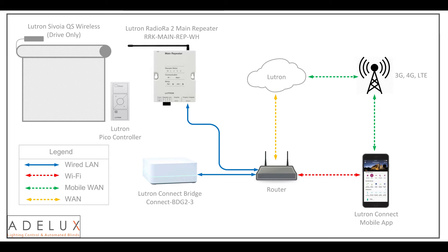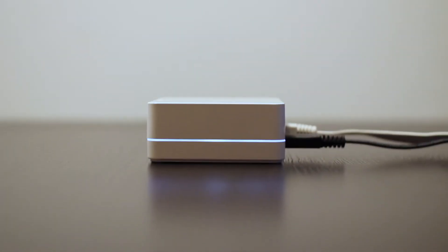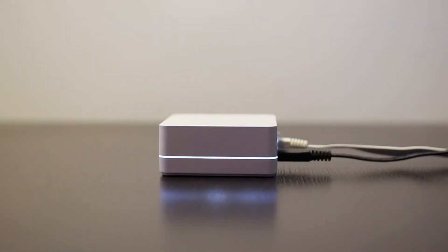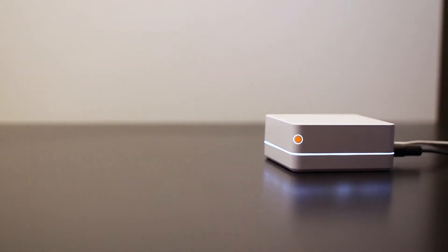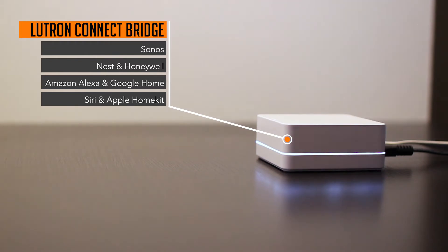To be able to use the Lutron Connect app, I need a Lutron Connect bridge. The Lutron Connect bridge will allow me to operate my blinds on my RA2 system using the app inside the house via Wi-Fi, but more importantly, the app will allow me to operate and monitor the Lutron system from outside the house via mobile phone services. The Lutron Connect bridge also allows integration with mainstream home automation systems such as Sonos for audio control, Nest and Honeywell to integrate thermostats, Amazon Alexa and Google Home for voice control, and Siri and HomeKit for Apple integration.